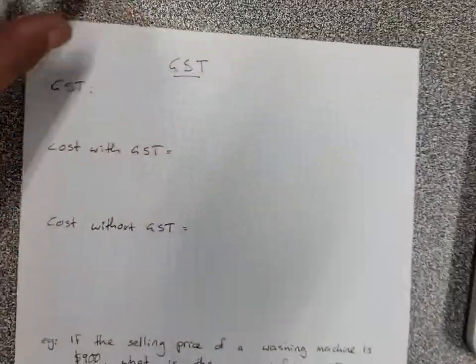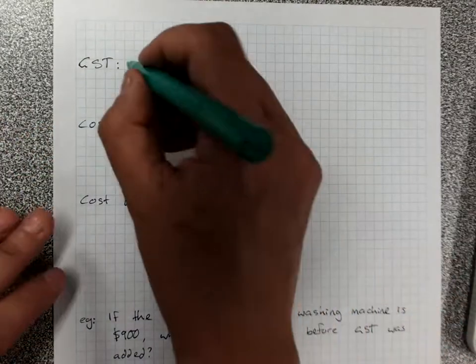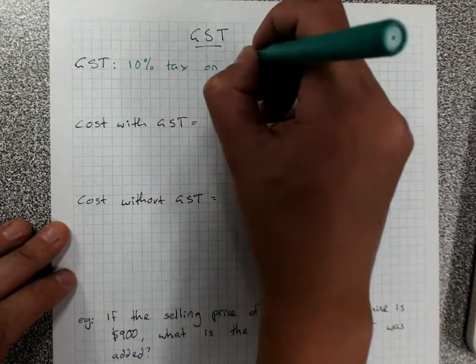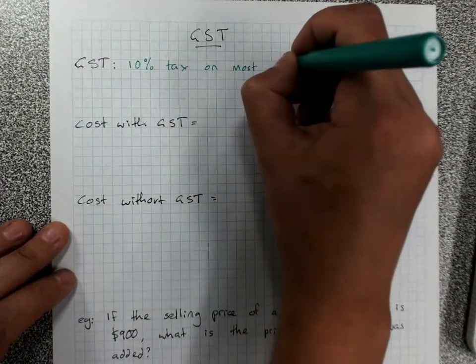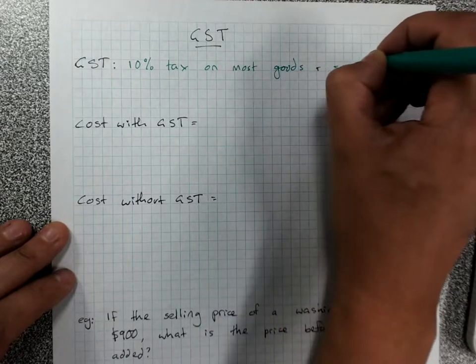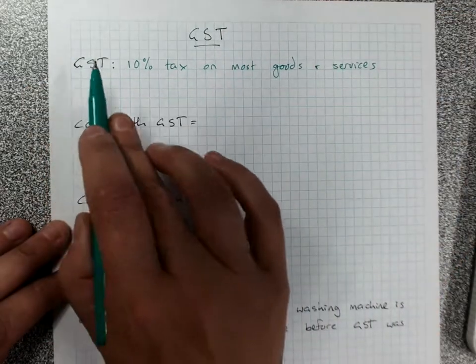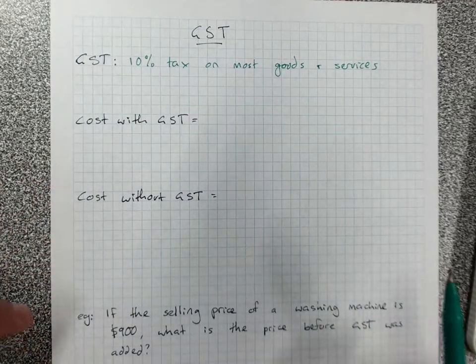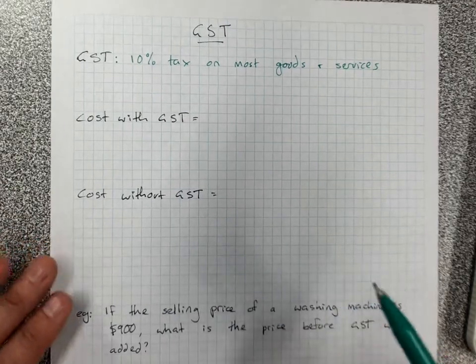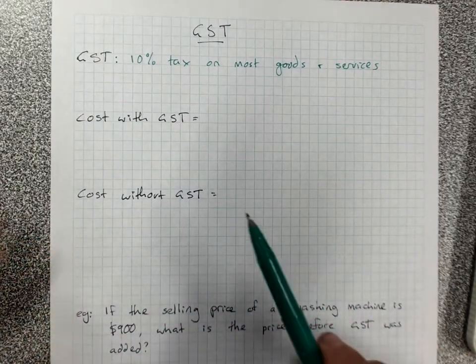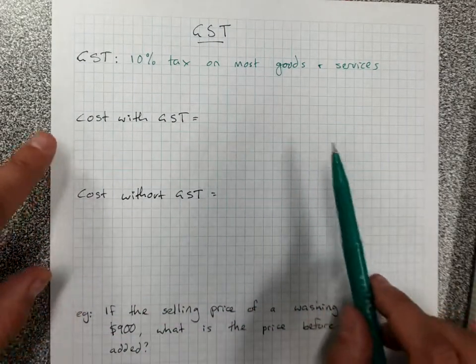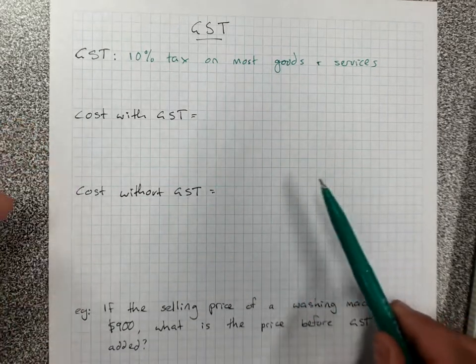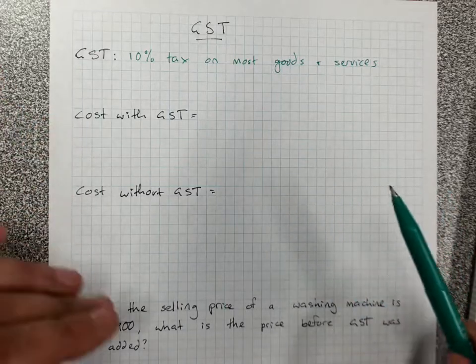One place this comes in handy is with GST. Remember that GST is a 10% tax on most goods and services in Australia. It stands for goods and services tax. Most of the time when you buy something its price already includes GST. A lot of the time though, price is quoted without GST on some larger websites or when a plumber or an electrician gives you a quote. Sometimes it's a cost with or without GST.